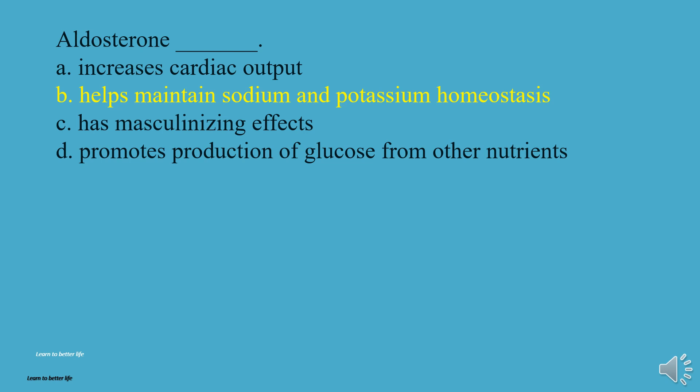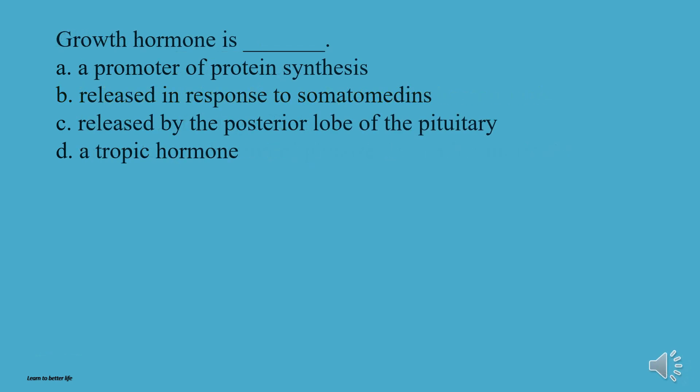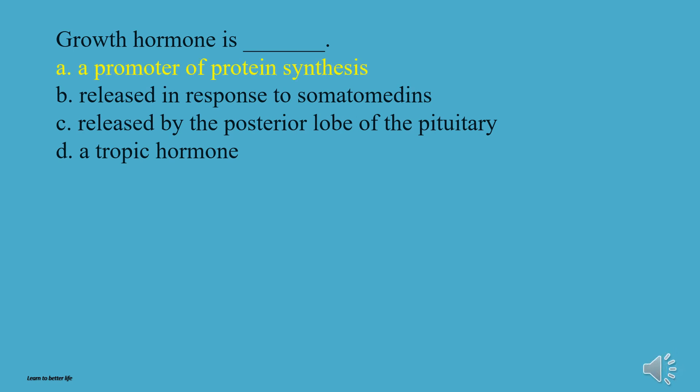Growth hormone is: A, A promoter of protein synthesis. B, Released in response to somatomedins. C, Released by the posterior lobe of the pituitary. D, A tropic hormone. The answer is A, a promoter of protein synthesis.